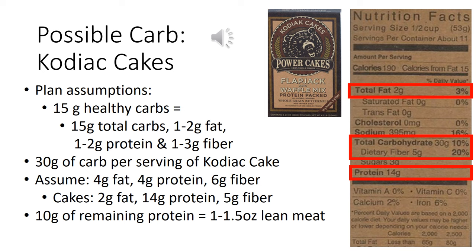The 10 remaining grams of protein are going to count towards your lean meat. You can go either way — 10 grams falls between one and one-and-a-half ounces of lean protein. If you only do one serving, you can call it just one ounce; if you're doing multiple servings, you'll probably want to count it as 1.5 ounces of lean meat.